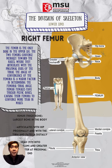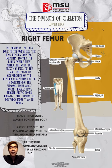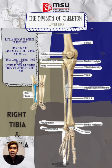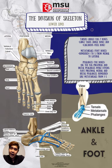The lower limb is also divided into three regions: the thigh between the hip and knee joints, the leg between the knee and ankle joints, and the foot distal to the ankle. The lower limb contains 30 bones: the femur, patella, tibia, fibula, tarsal bones, metatarsal bones, and phalanges. The femur is the single bone of the thigh. The patella is the kneecap and articulates with the distal femur. The tibia is the larger weight-bearing bone on the medial side of the leg, and the fibula is the thin bone of the lateral leg. The foot is divided into three groups: the posterior portion contains seven tarsal bones, the midfoot contains five metatarsal bones, and the toes contain 14 phalanx bones.